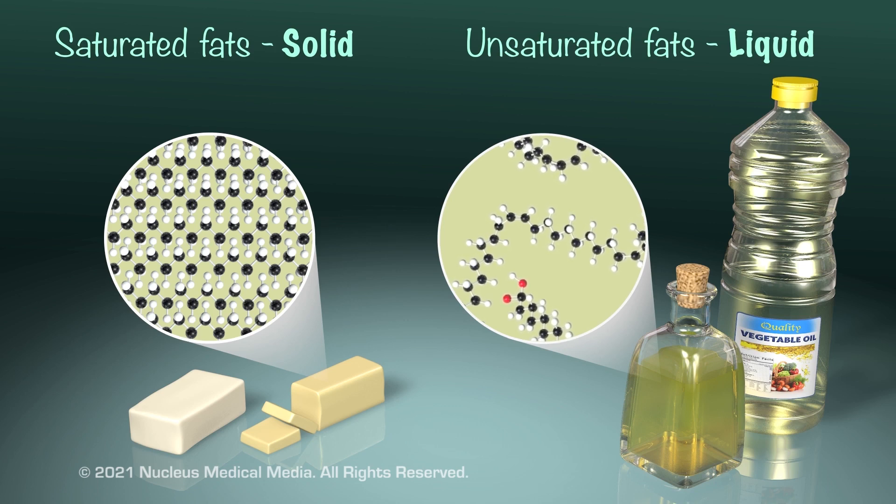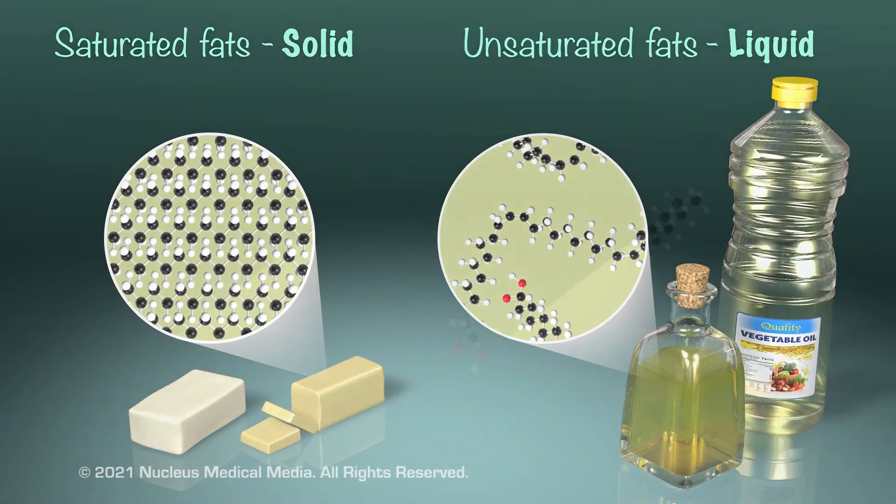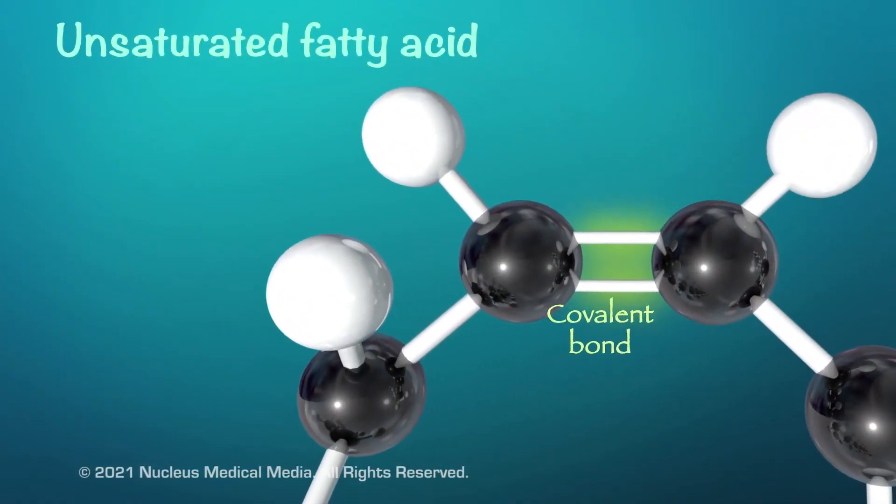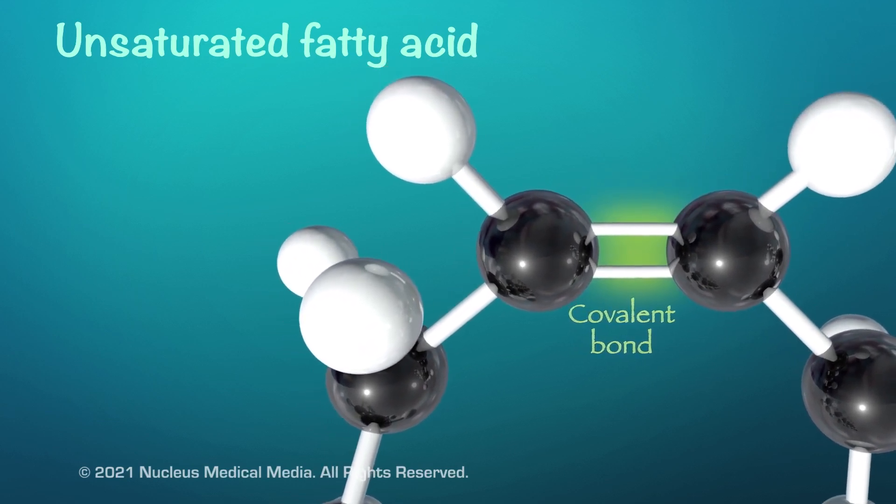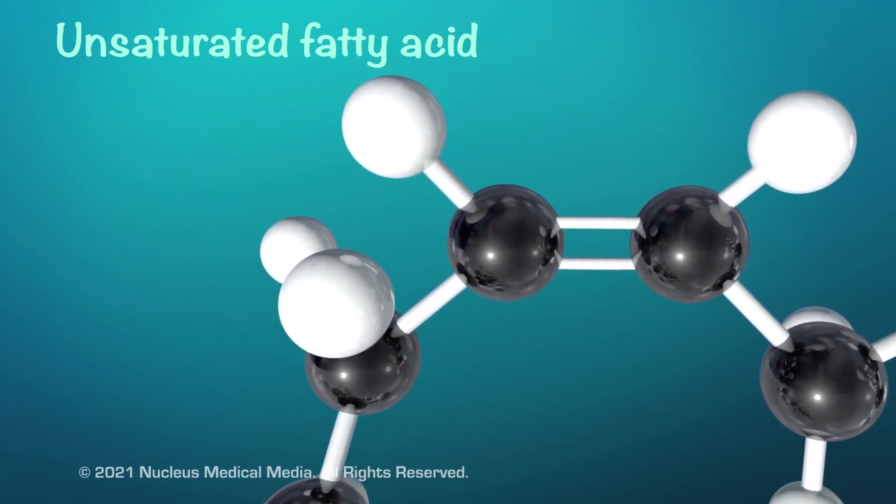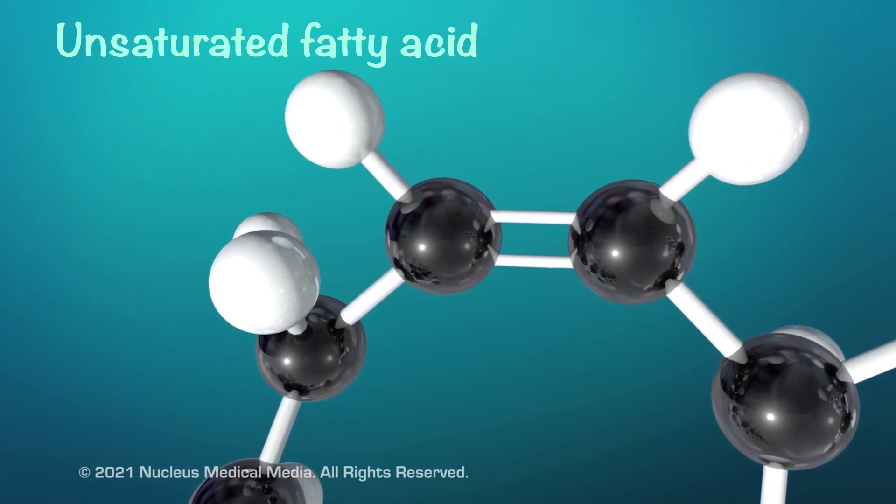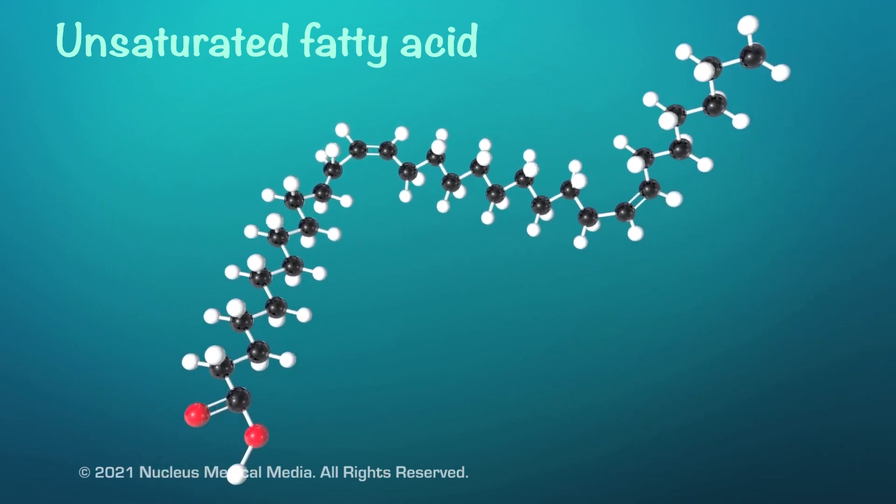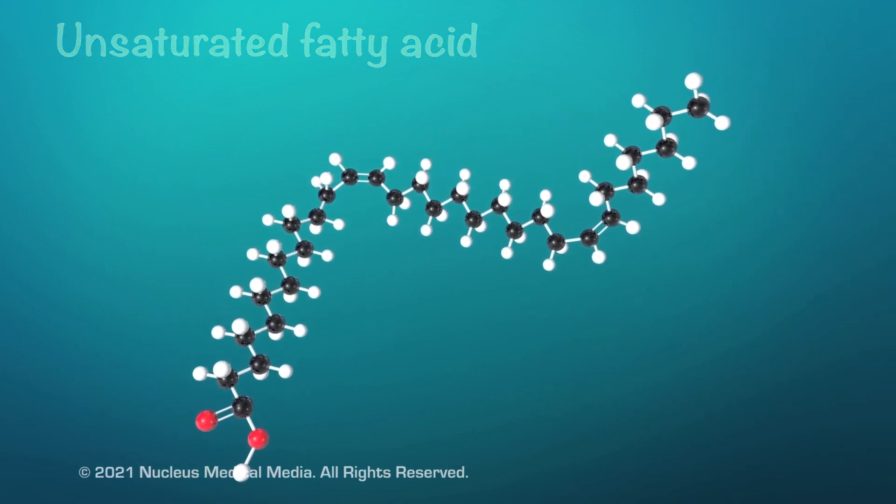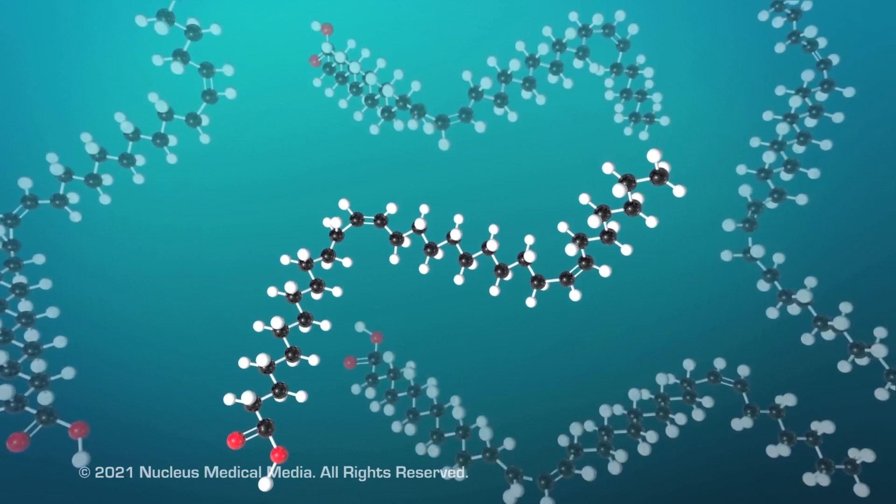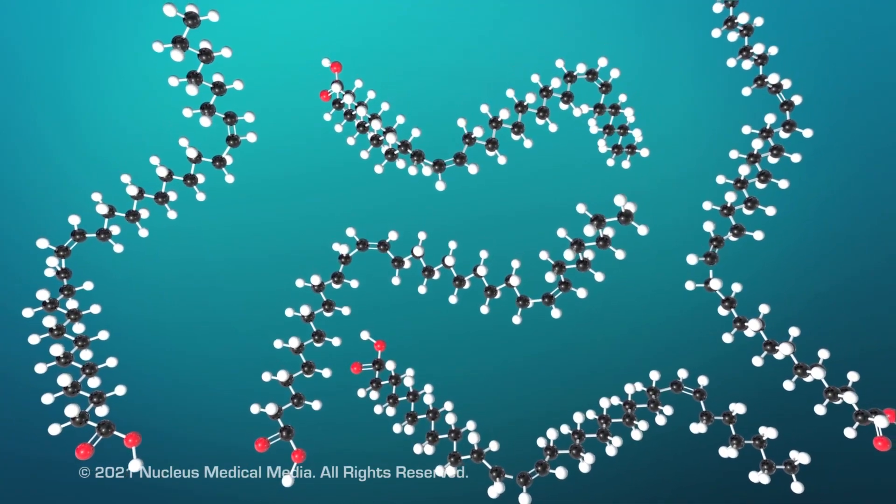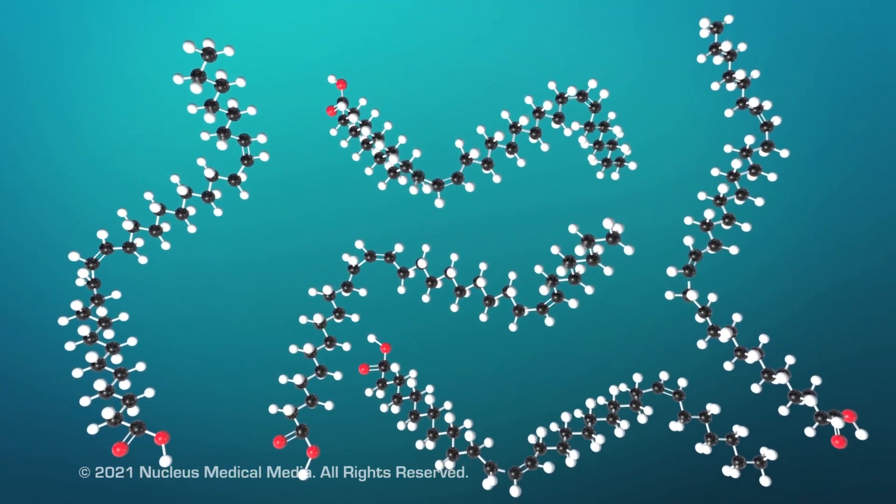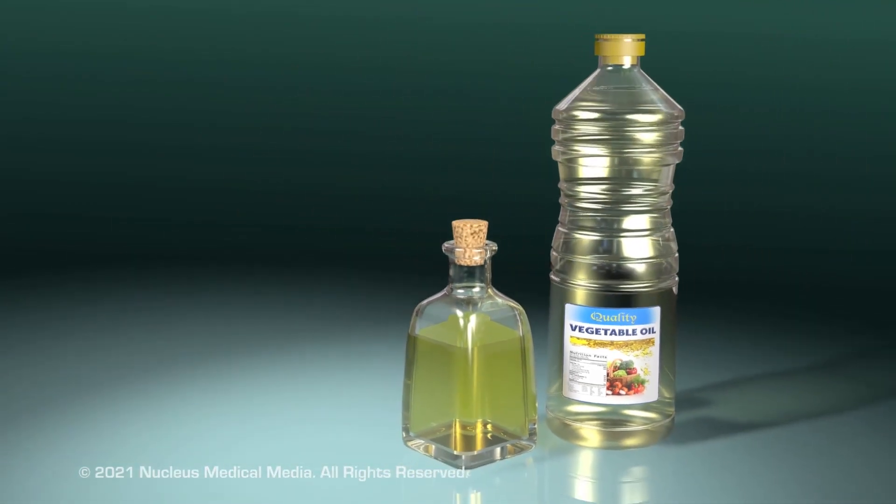So, why are unsaturated fats liquid at room temperature? Well, unsaturated fatty acids have one or more double covalent bonds between carbon atoms. This means the unsaturated fatty acid has gaps in the hydrogen saturation. The carbon double bonds form kinks in the fatty acid, which prevent the molecules from packing together tightly. As a result, the more loosely packed molecules form a liquid instead of a solid at room temperature.